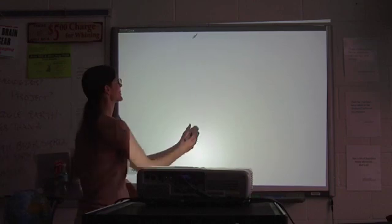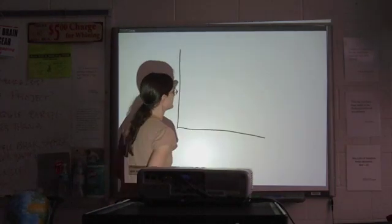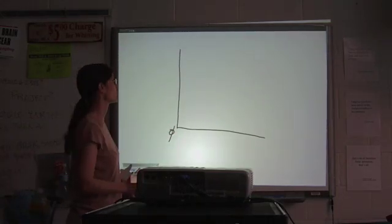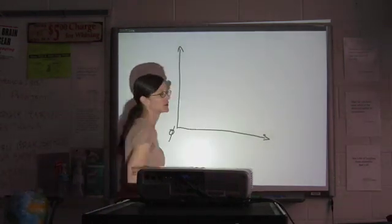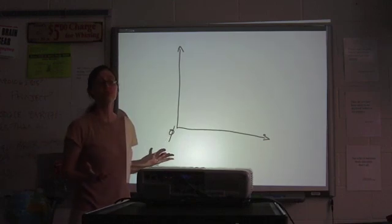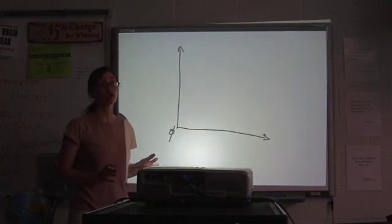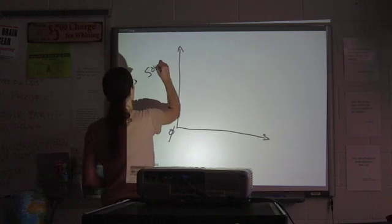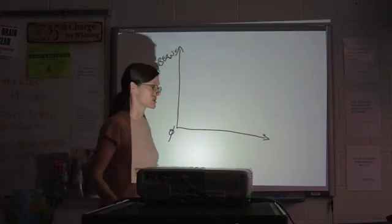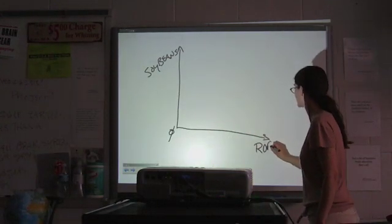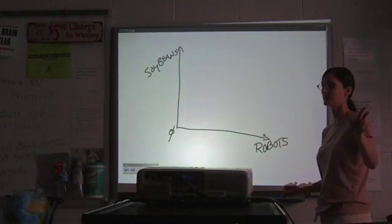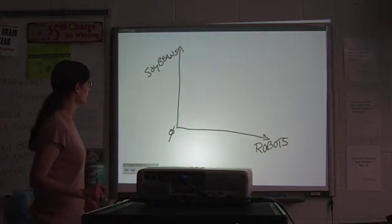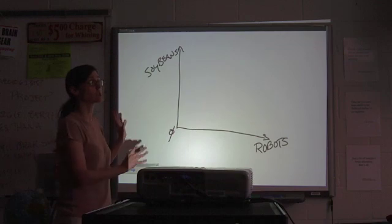All right, so to draw the production possibilities frontier, again, you're starting with the first quadrant. Just get in the habit of always putting in zero. It's good to have them there, just so you don't forget that's the origin. And we're increasing in both those directions. Now, a classic example that you might see is comparing production of something agricultural with something technological. So, let's go with soybeans and robots. What about guns and butter? You cool it for about five minutes. All right, that's my cameraman throwing in his two cents.